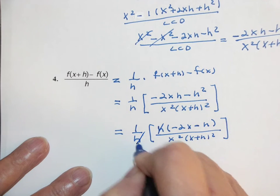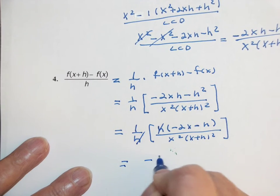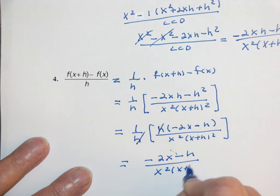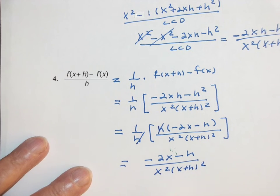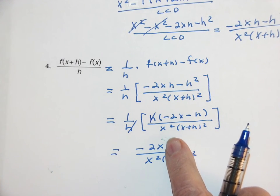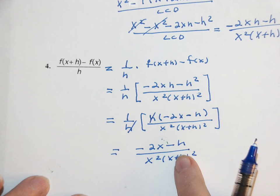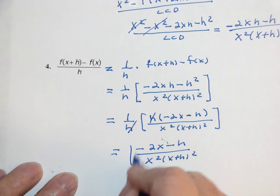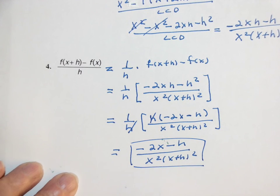The h's will reduce out. You're left with negative 2x minus h over x²(x+h)². Now if I let h go to 0, the numerator is no longer 0, the denominator is no longer 0. That's the algebra part of a problem in 2.1. Thank you.